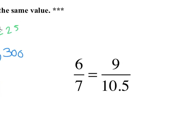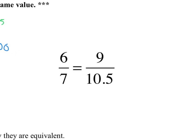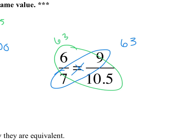I'm going to ask you to try the next one by yourself. So in Edpuzzle, you will simply write in your answer. In live time, we'll go over it. So I do 7 times 9, and I get 63. I do 6 times 10.5, and I get 63, which means that they are equivalent ratios.